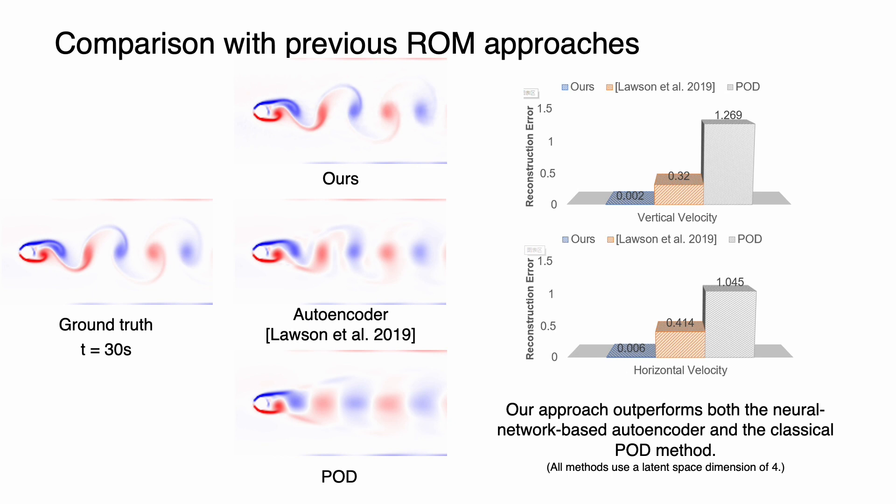In comparison to previous ROM approaches, we outperform when up against both classical and neural network autoencoder approaches of the same latent space dimension.